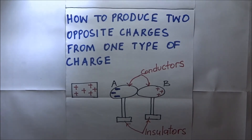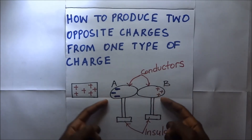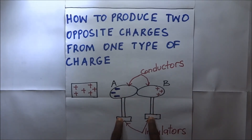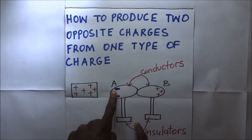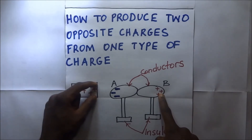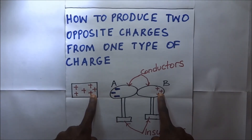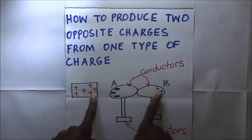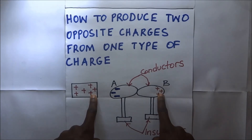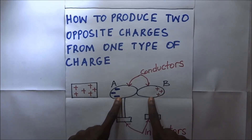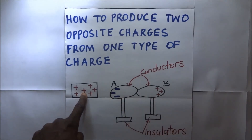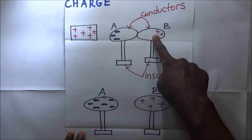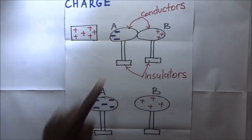How to produce two opposite charges from one type of charge: we get two conductors — conductor A and conductor B — in contact, both positioned on insulators. We bring a positive charge near end A. The positive charges attract the negative charges within the conductors, so the negative charges move toward end A, leaving end B with a net positive charge. While the charged body is still in position, we separate the two conductors. After separation, conductor B has a predominantly positive charge and conductor A is negatively charged.